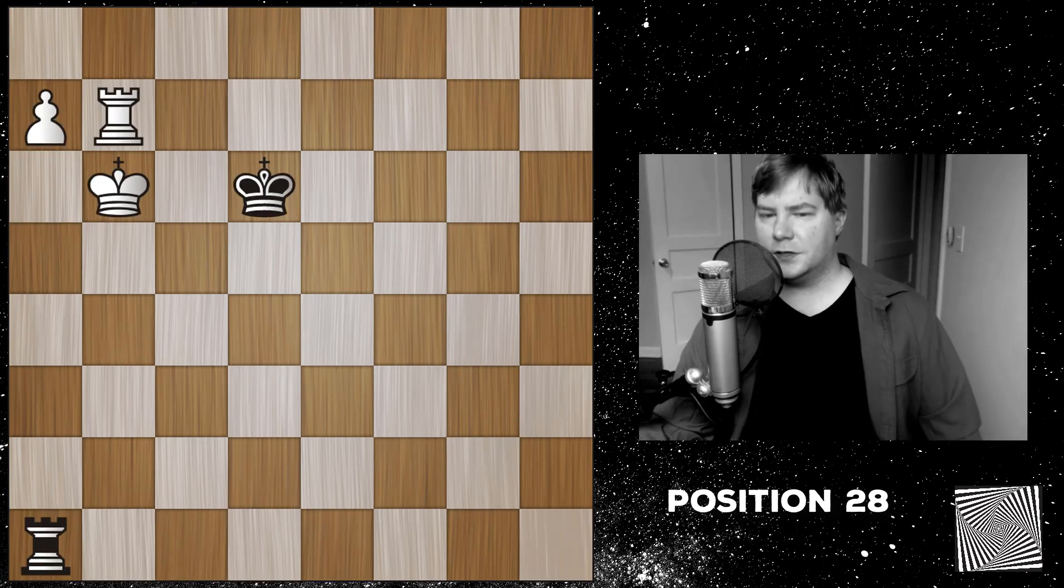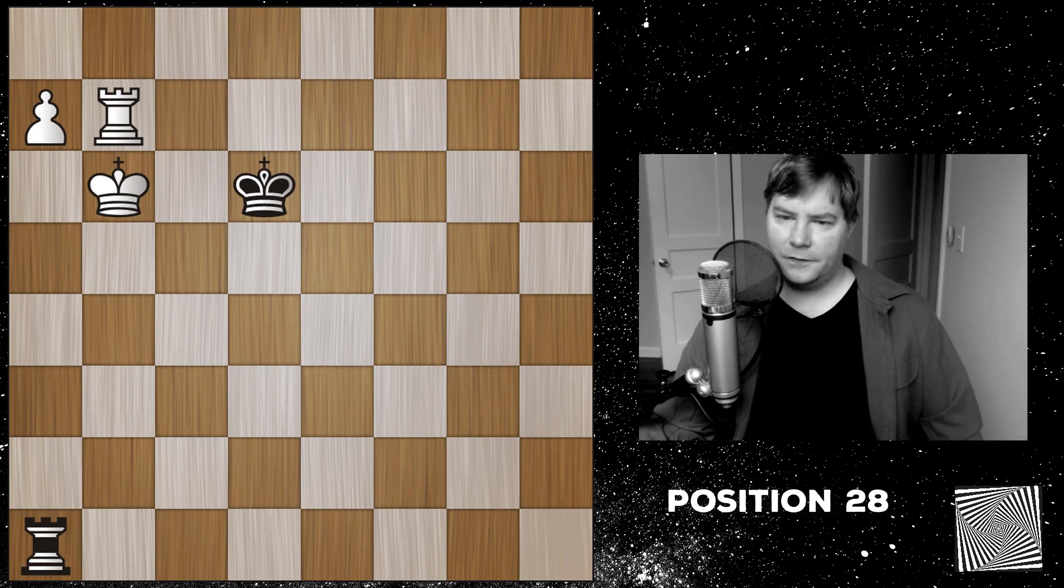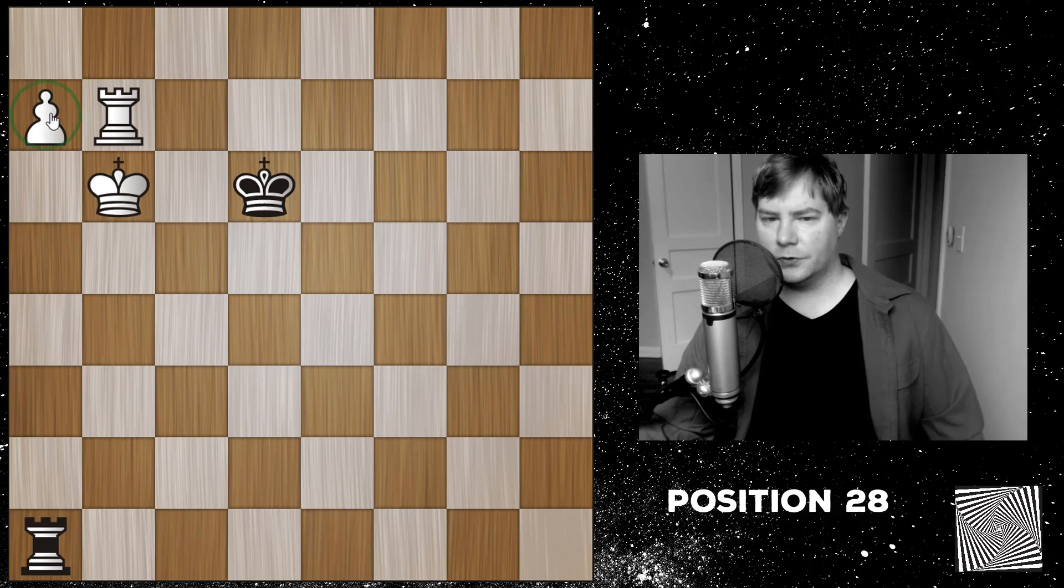In summary for this position, if it's white to move, then it's a win, black to move a draw. And the key properties of these rook-pawn endgames is that if the white king can't support the pawn along with the rook, then it's normally a draw. And if the black king can get in, then it's a draw.